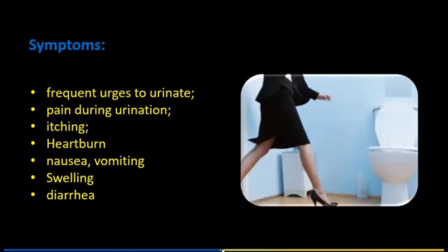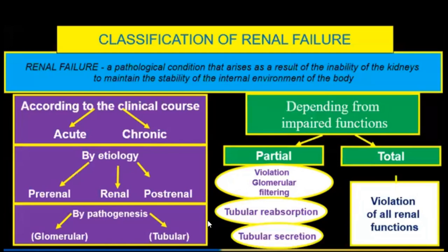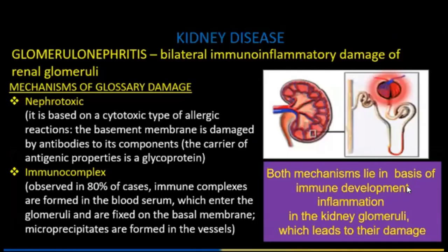Classification of renal failure: renal failure is a pathological condition resulting from inability of kidneys to maintain stability of the internal environment of the body. According to clinical course: acute and chronic. By etiology: pre-renal, renal, and post-renal. By pathogenesis: glomerular and tubular. Depending on impaired function: partial — violation of glomerular filtering, tubular absorption, or tubular secretion — and total, which is violation of all renal functions.